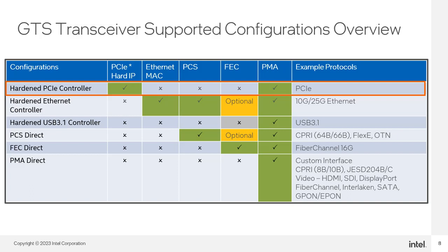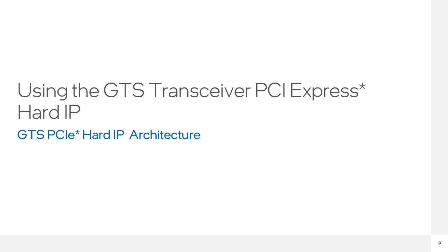There are six configurations: Hardened PCIe, Hardened Ethernet, Hardened USB 3.1, PCS Direct, FEC Direct, and PMA Direct. The PCIe configuration is highlighted here. As you can see, it uses the PCIe Hard IP and the PMA.